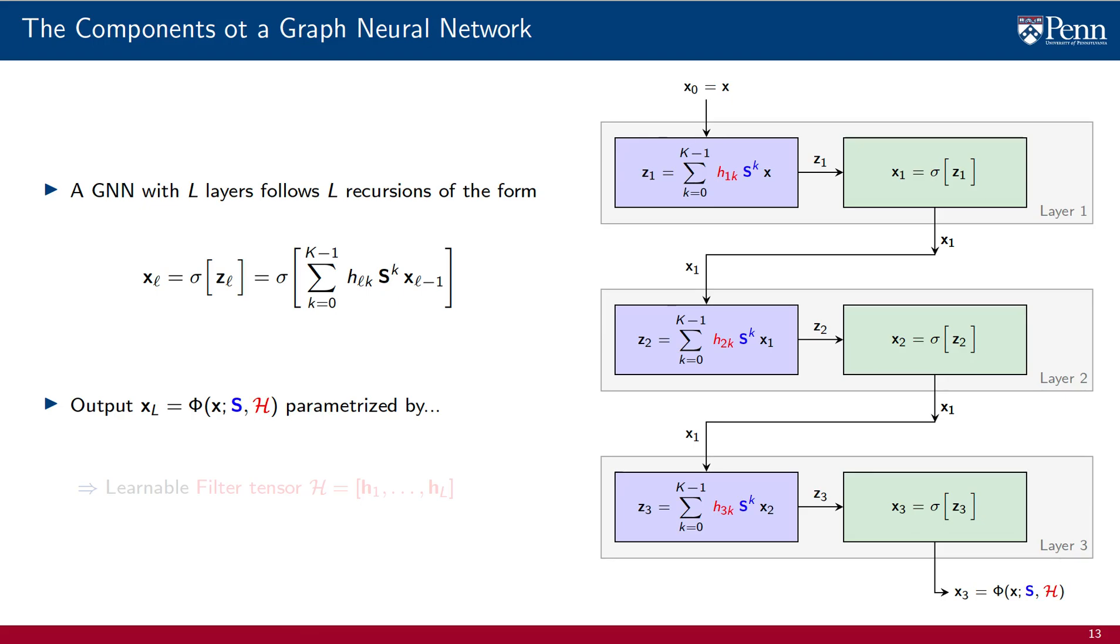The output of the GNN is the output xL of layer L. We represent this map as phi of S and H. The learnable parameter in this function class is the filter tensor calligraphic H, which is a grouping of all the filter coefficients HLK that are used across all layers.